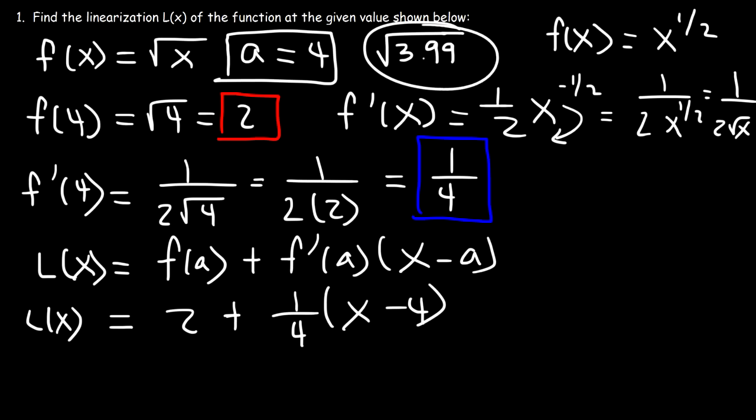So, we have 0.25 times negative 0.01. Now, 0.25 times 1 is equal to itself. If we multiply it by 0.1, it's going to be 0.025. You just got to move the decimal point. And then, if you multiply it by 0.01, you got to move the decimal point by two spaces. So, it's going to be 0.0025. So, this is 2 minus 0.0025, which equals 1.9975.